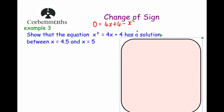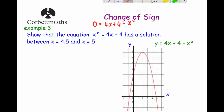I've drawn the graph of y equals 4x plus 4 minus x squared. There are actually two solutions: one between minus 1 and 0, and one between 4 and 5. The question asks us to show the solution between 4.5 and 5. From the graph, substituting 4.5 should give a positive value, and substituting 5 should give a negative value, confirming a change of sign.